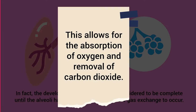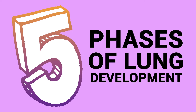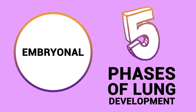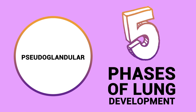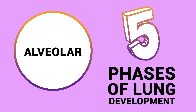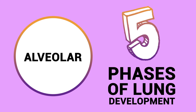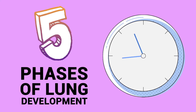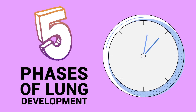There are five phases of lung development in humans: the embryonal, pseudoglandular, canalicular, saccular, and alveolar. Each phase has a general time of occurrence where certain events of significance take place.